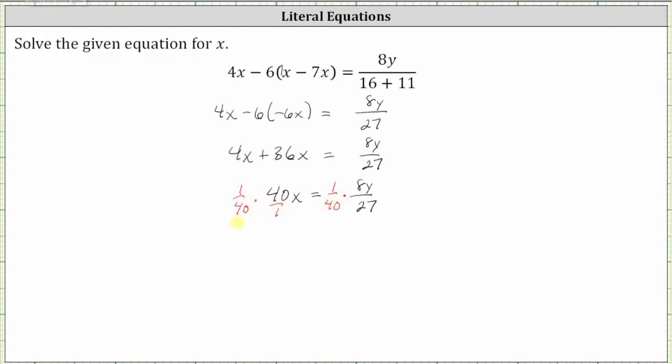On the left, 1 over 40 times 40 x is equal to 1 x or x, which is exactly why we multiplied both sides of the equation by 1 over 40. Or if we want to show the simplification, there's 1 over 40 and 40 in the numerator and the denominator, again, giving us just x on the left.